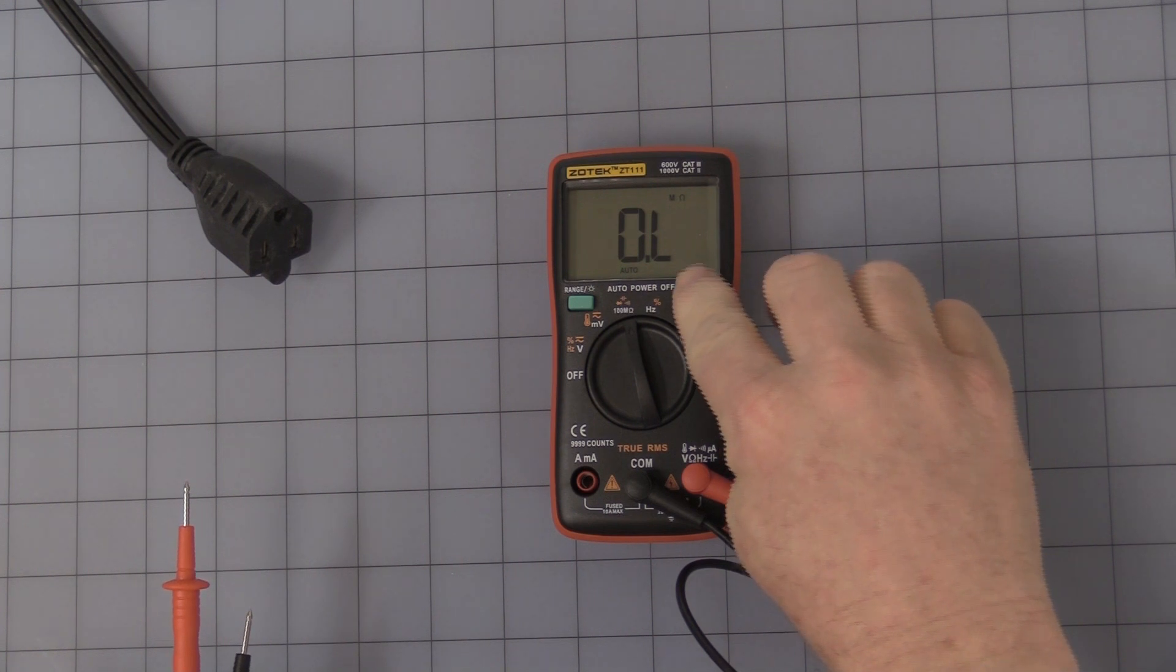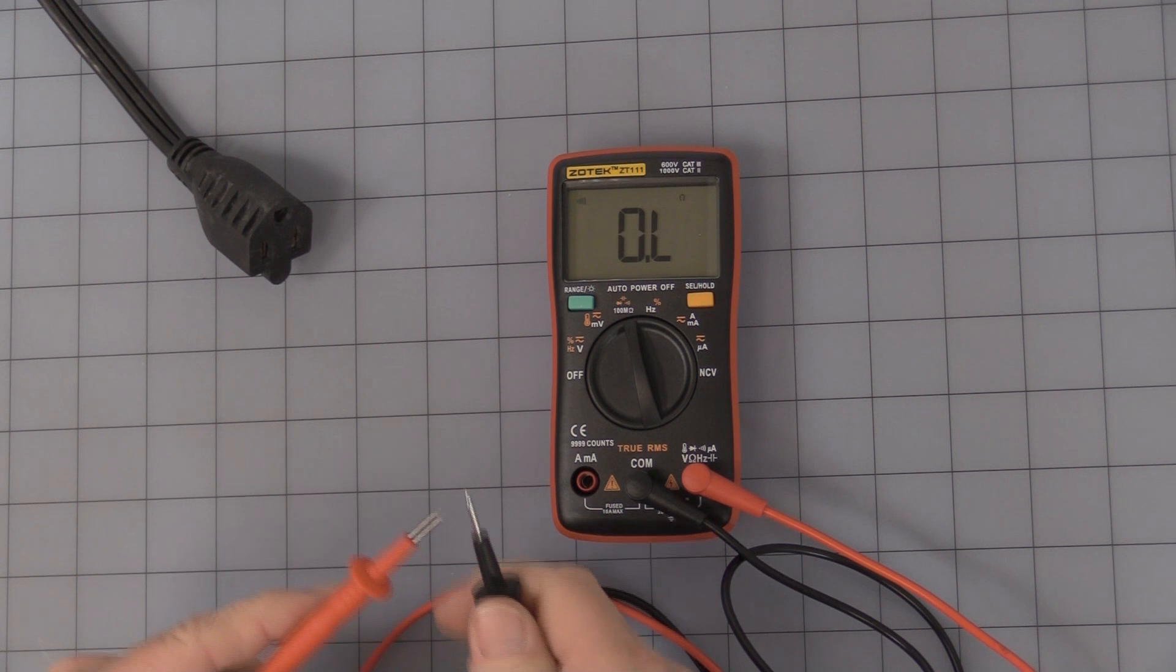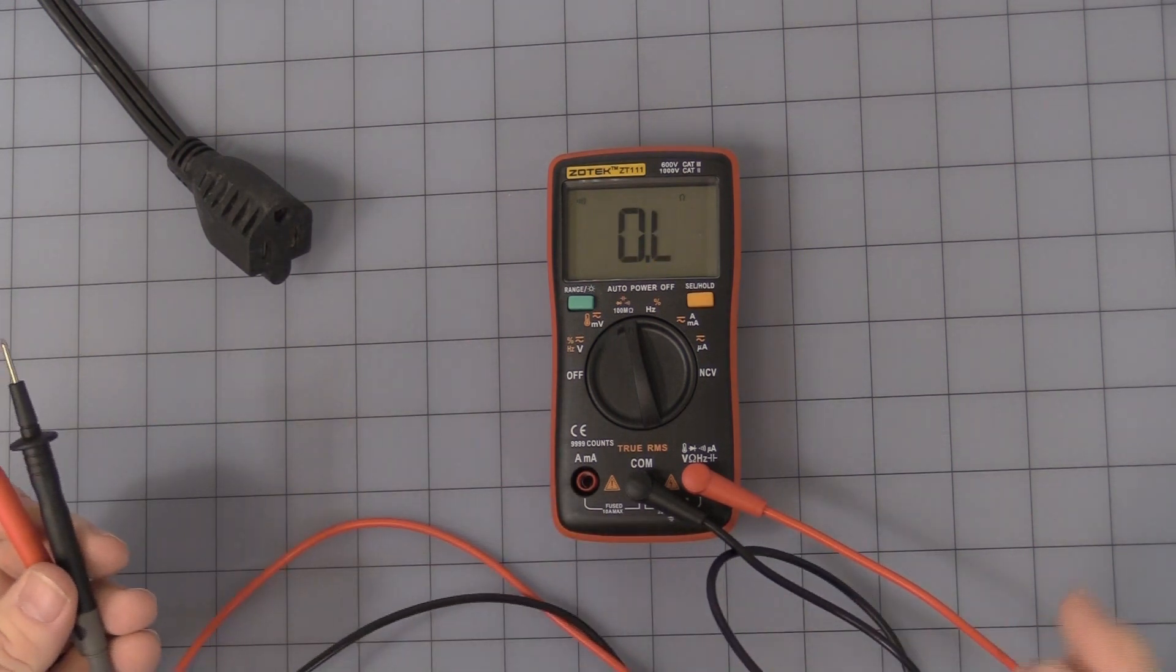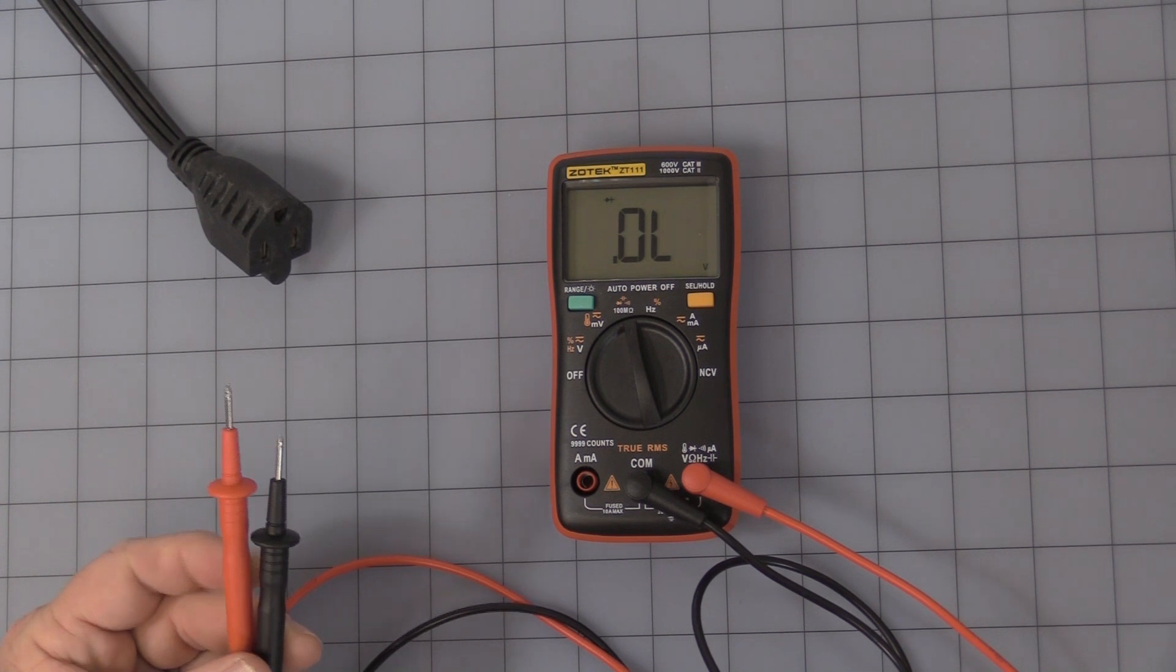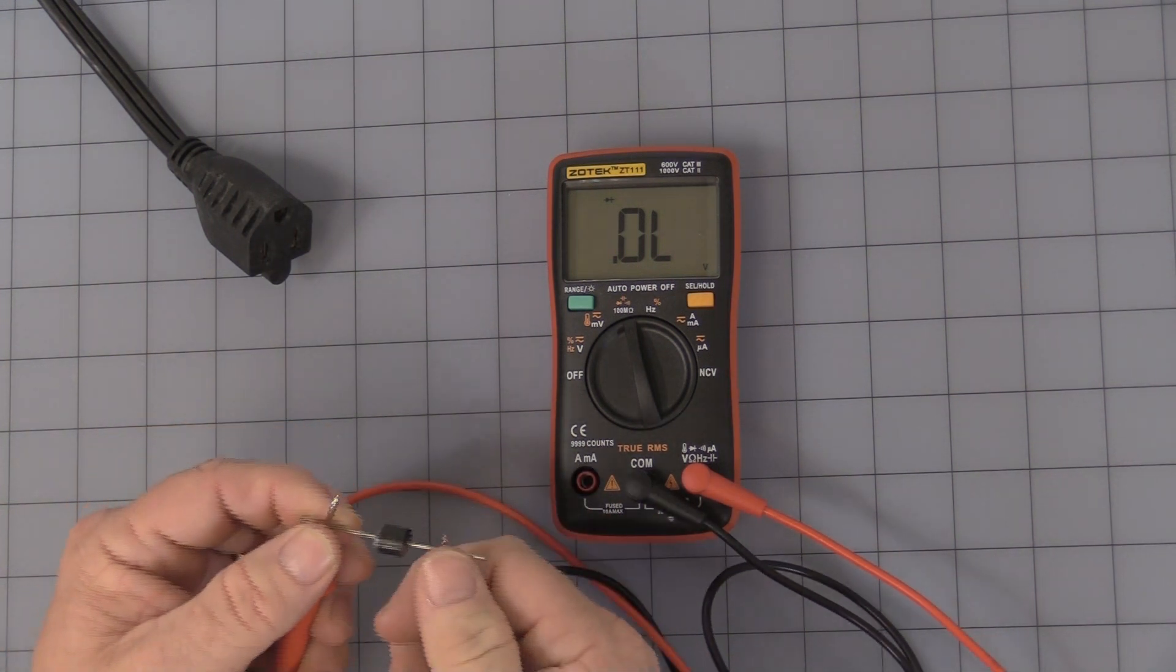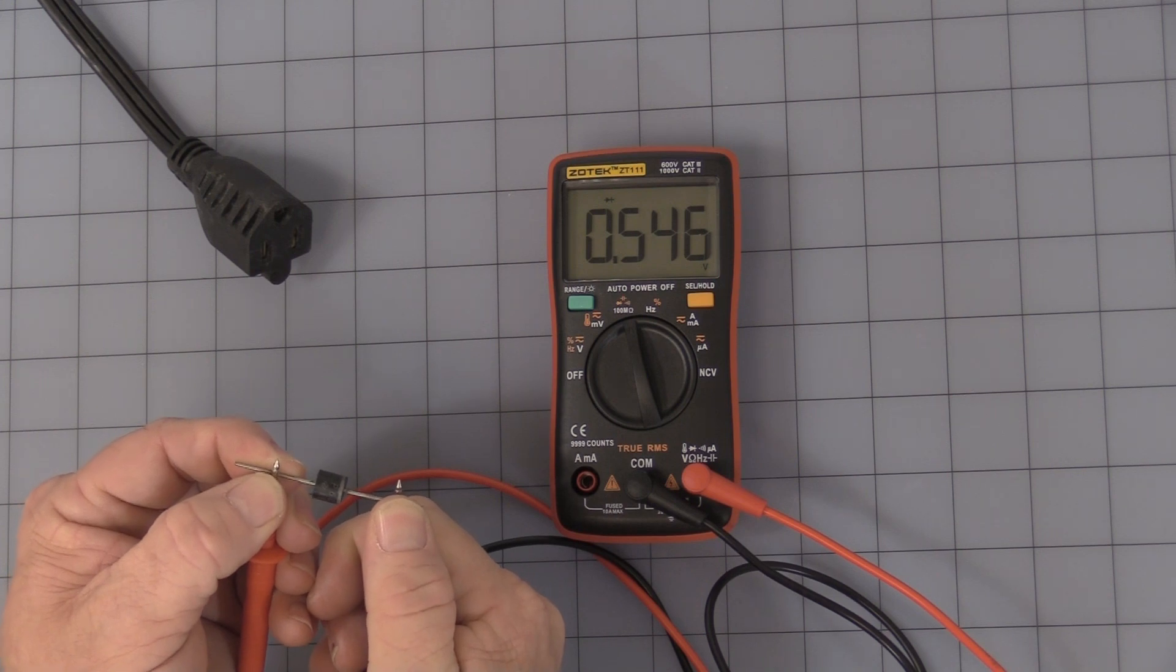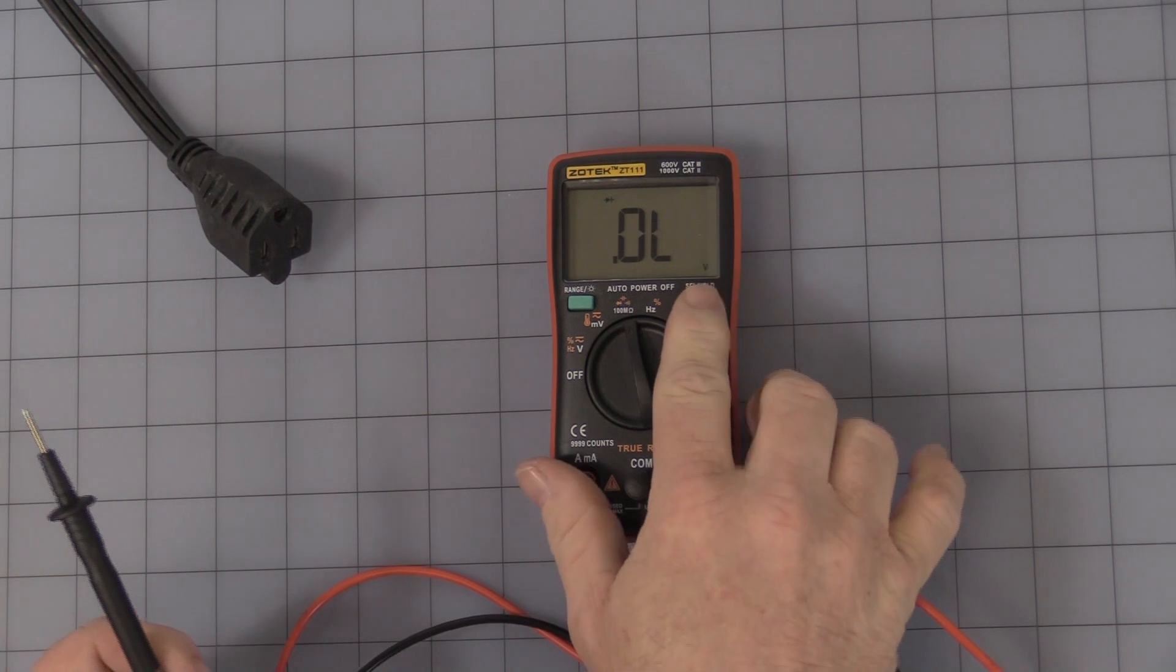We press our select button once more and we are into audible continuity. Decent buzzer. I've heard some that are very weak and hard to hear. We press it again and we are into our diode tester. Just over half a volt for a silicon diode.